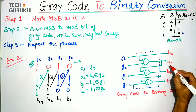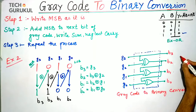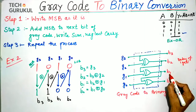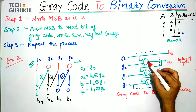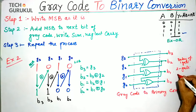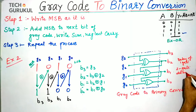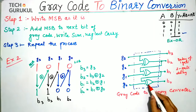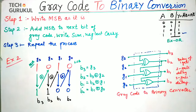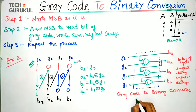We observe that output B2 has a delay of one gate. Output B1 has a delay of one plus one — two gate delays. And the final output has three gate delays. So in the case of Gray code to Binary conversion, delay increases with each stage.